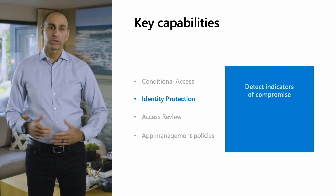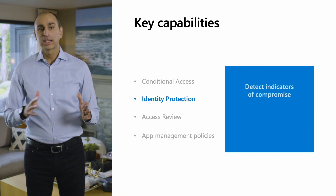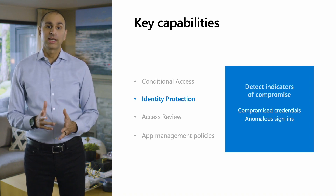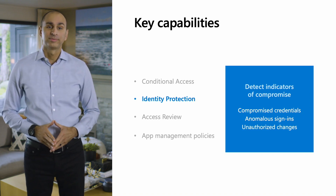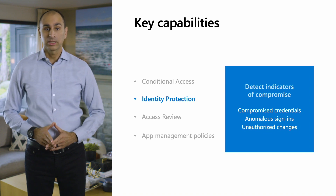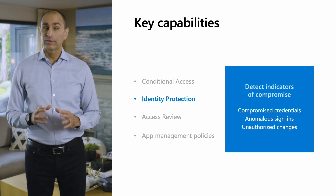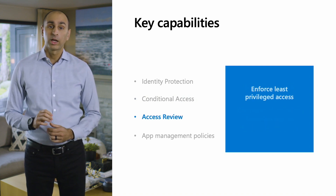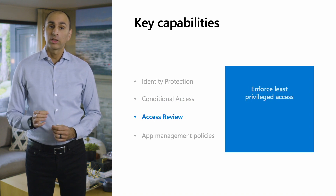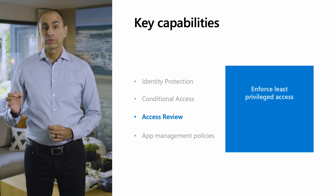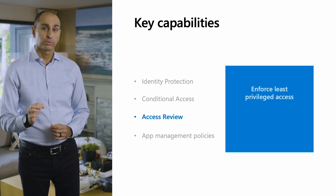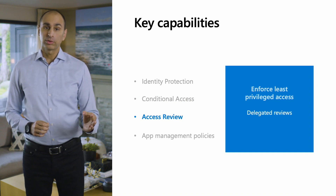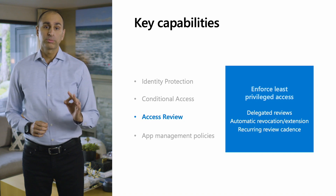Conditional access also supports risk-based policies for workload identities, allowing you to block access when identity protection flags an account for risk. We look across the identity lifecycle to spot indicators of compromise — compromised credentials, anomalous sign-ins, and unauthorized changes to the account. While we've learned a lot from user detections, we've discovered that workload identities have unique characteristics requiring purpose-built detections. Another key aspect of defense in depth is attestation — reviewing, confirming, or revoking access to enforce the zero trust principle of least privilege.